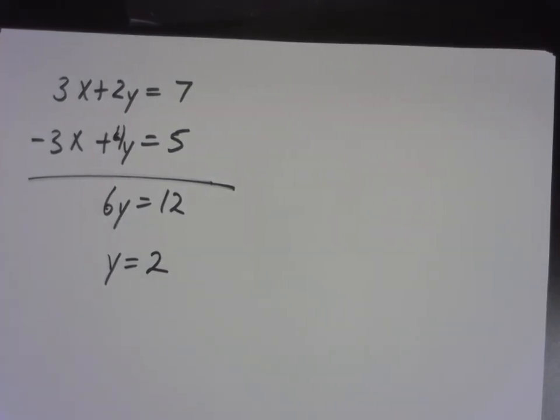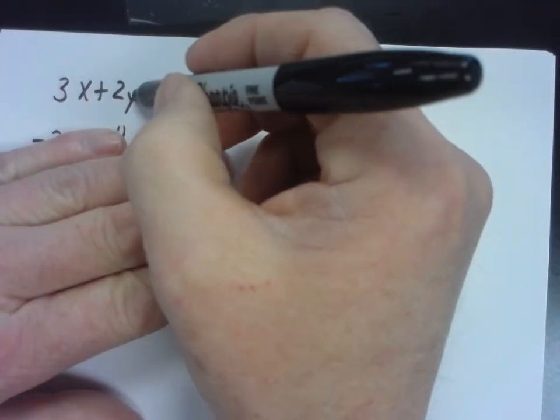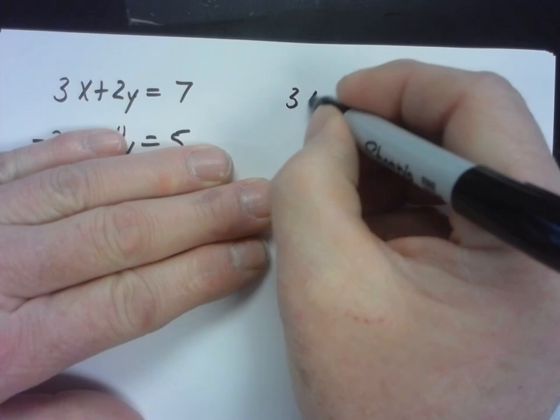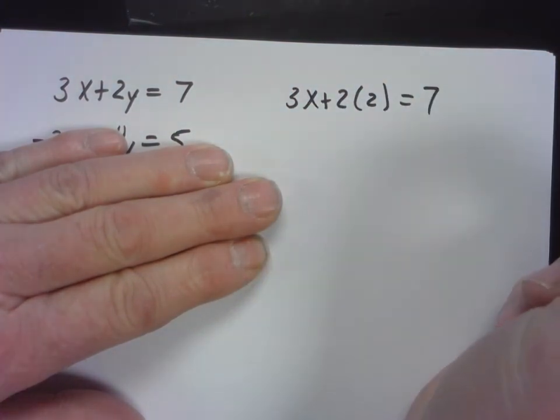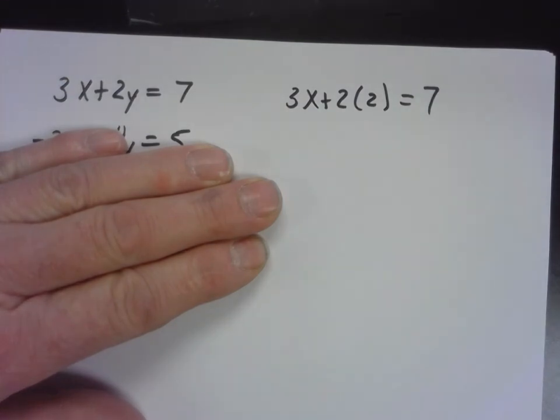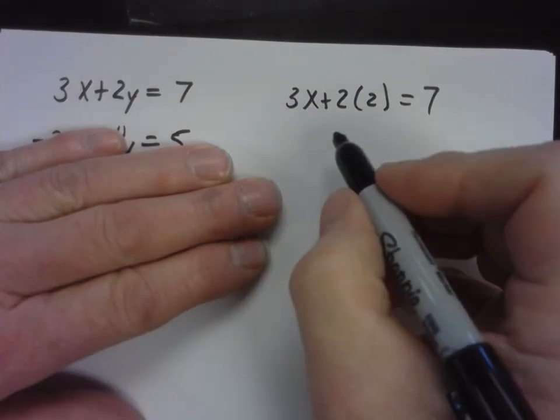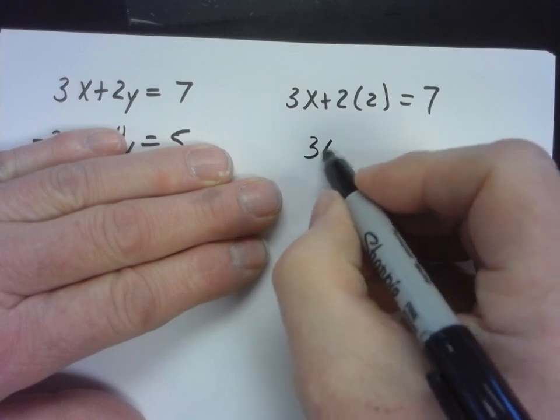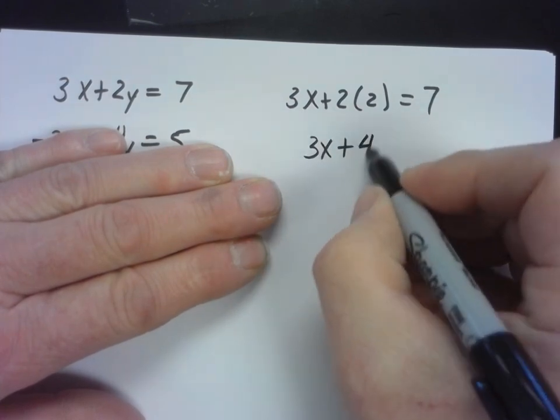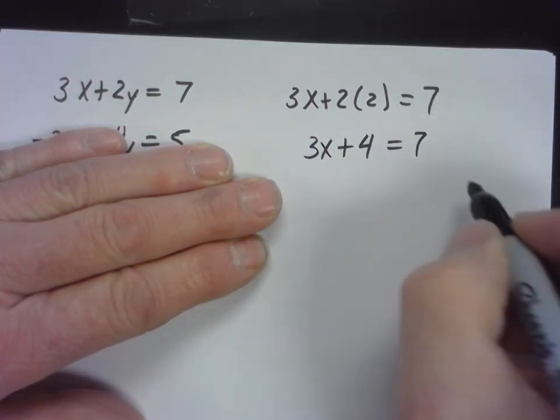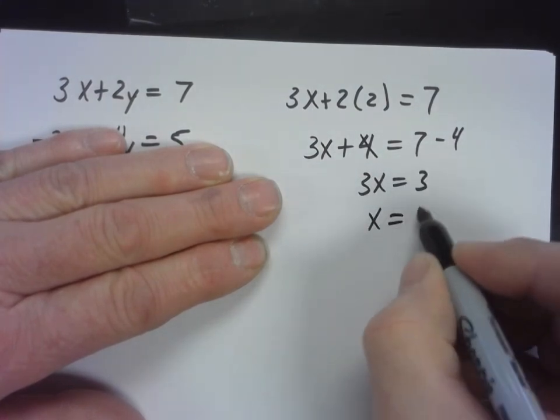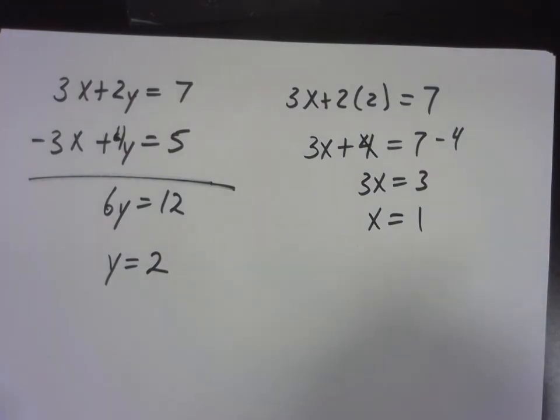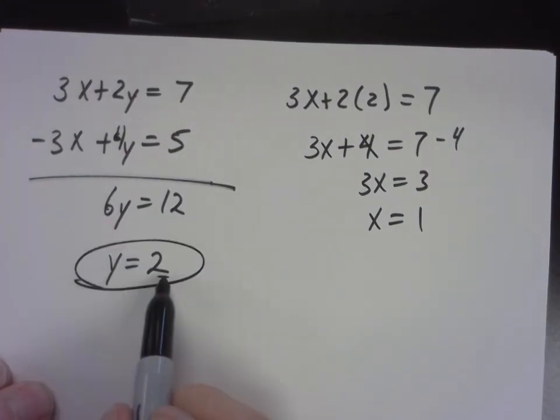We got y equals 2. And once we know that y is equal to 2, well, then up here on the top equation, what can we put right where y is? Hold on a minute, before you string me up, you might want to watch the whole lesson. So that equals 7. Subtract 4 from both sides. That equals 3, x equals 1.